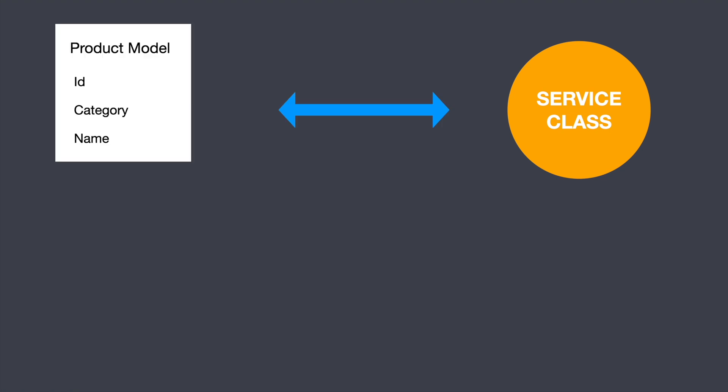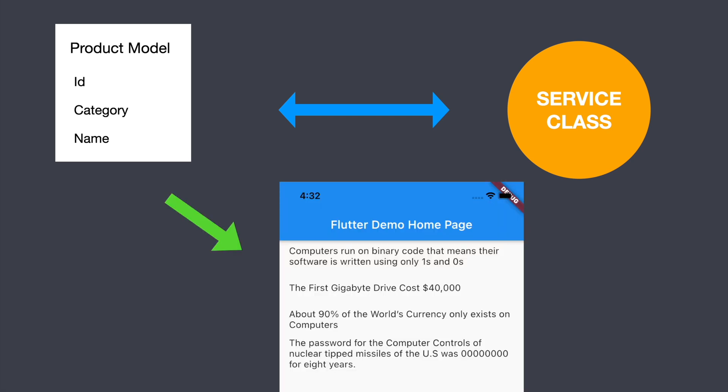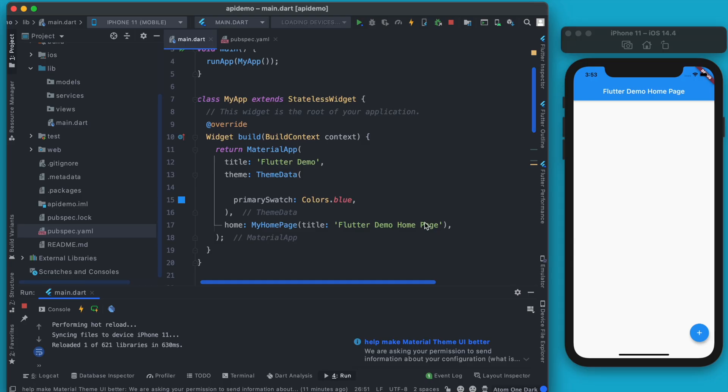To understand this diagrammatically: inside the Service class, all the basic logic where we fetch data or make an API call to the server is written. It takes up data in JSON format and converts it into Models. Models are just a class representation of the data with different variables, and from that model we render it into our UI — for example, displaying the titles of the facts.